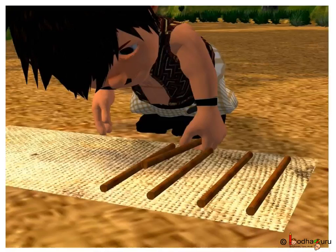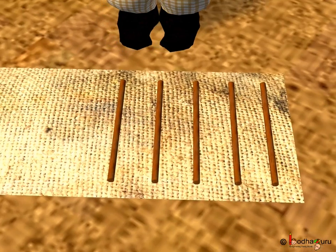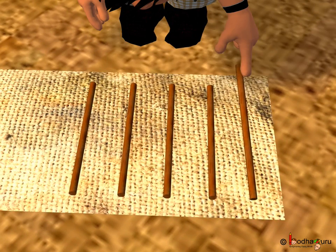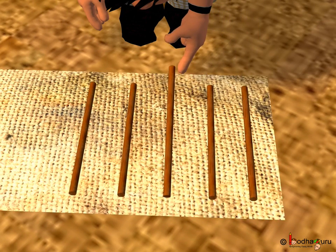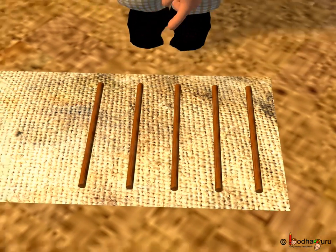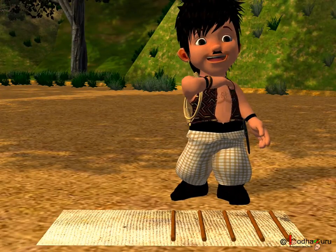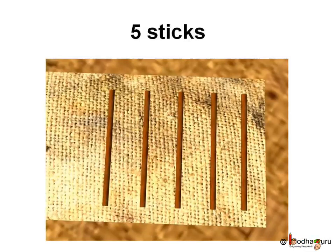How many sticks does Bola have now? Three sticks and two more sticks — so it is one, two, three, four, five. Total five sticks. Now Bola has five sticks.